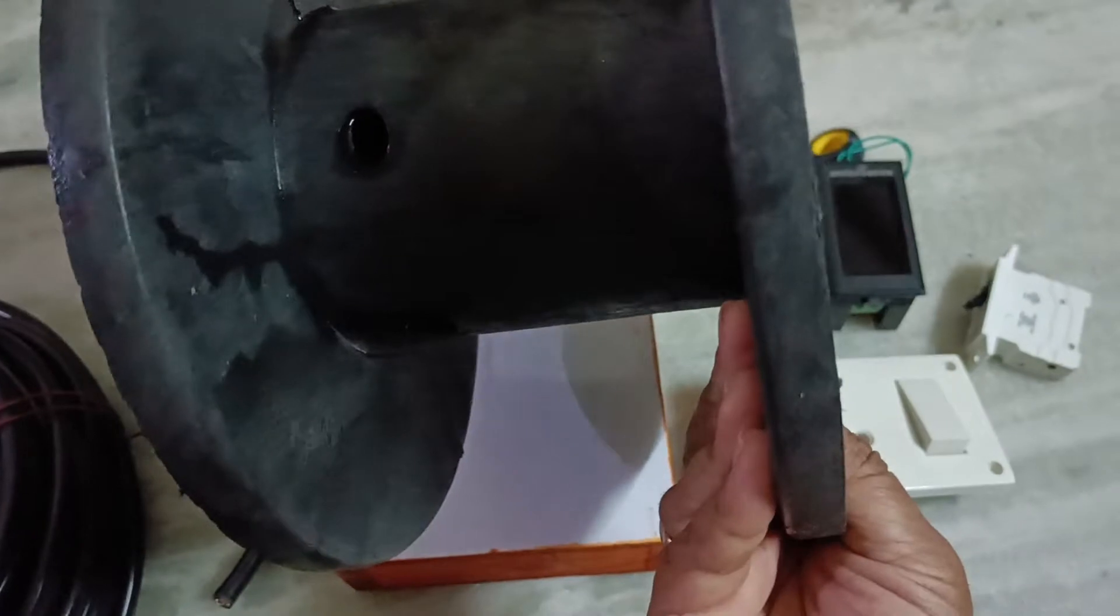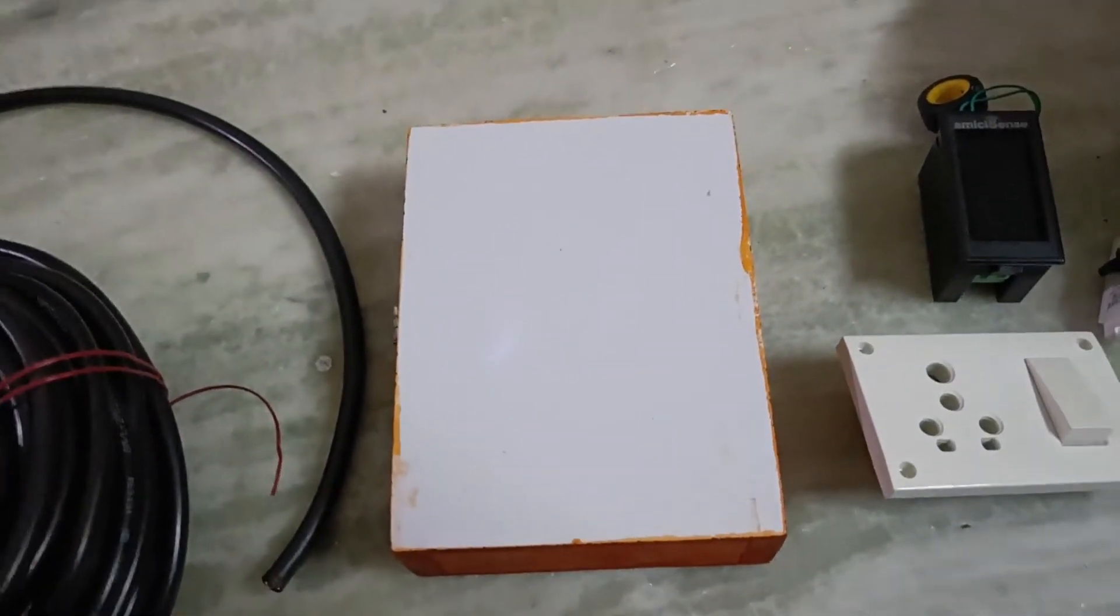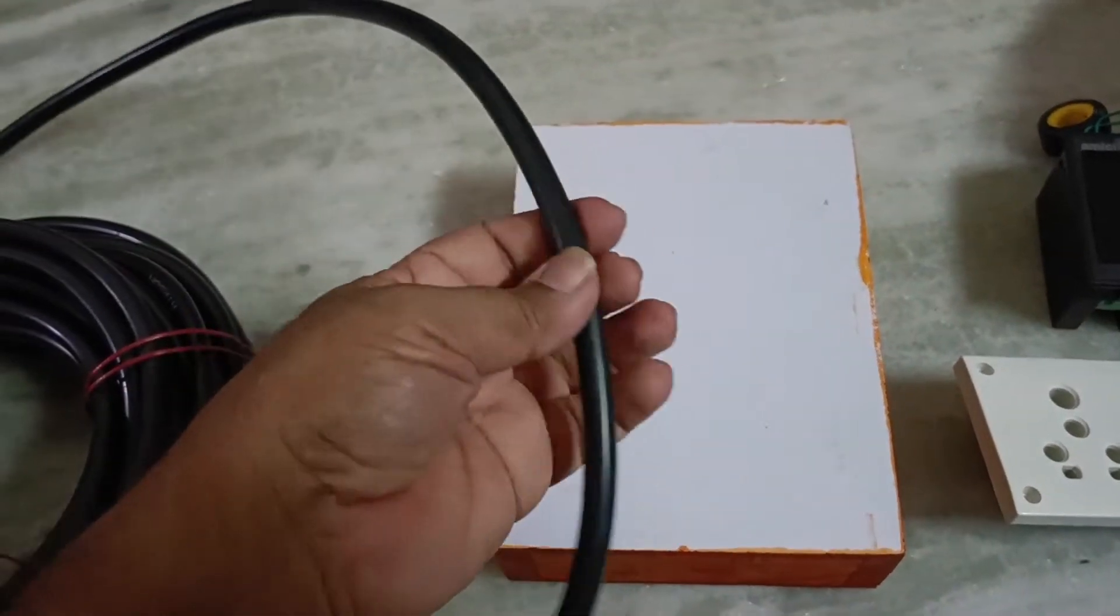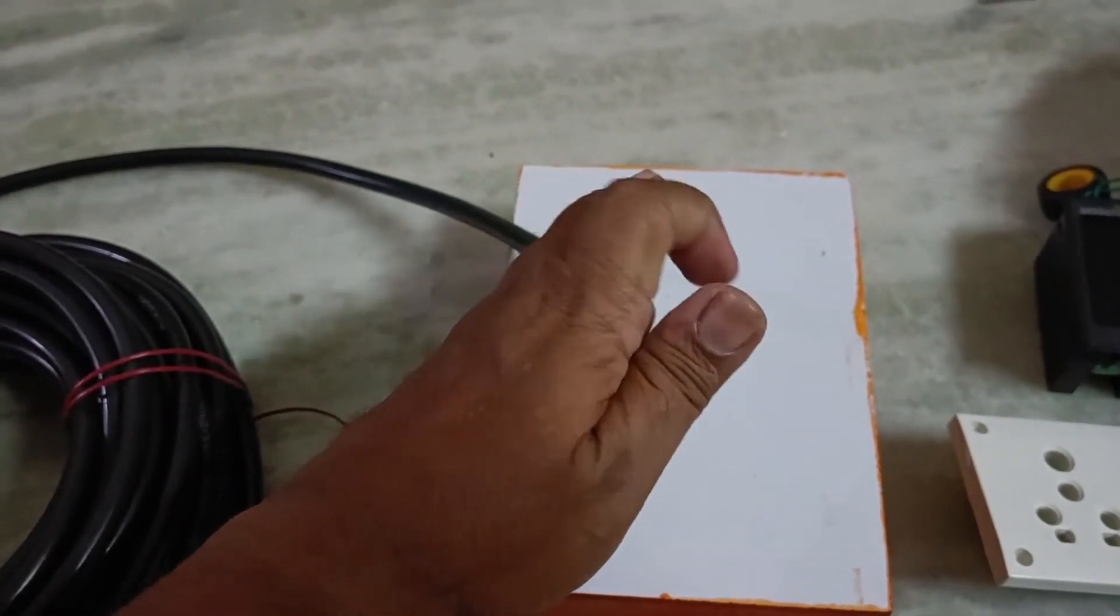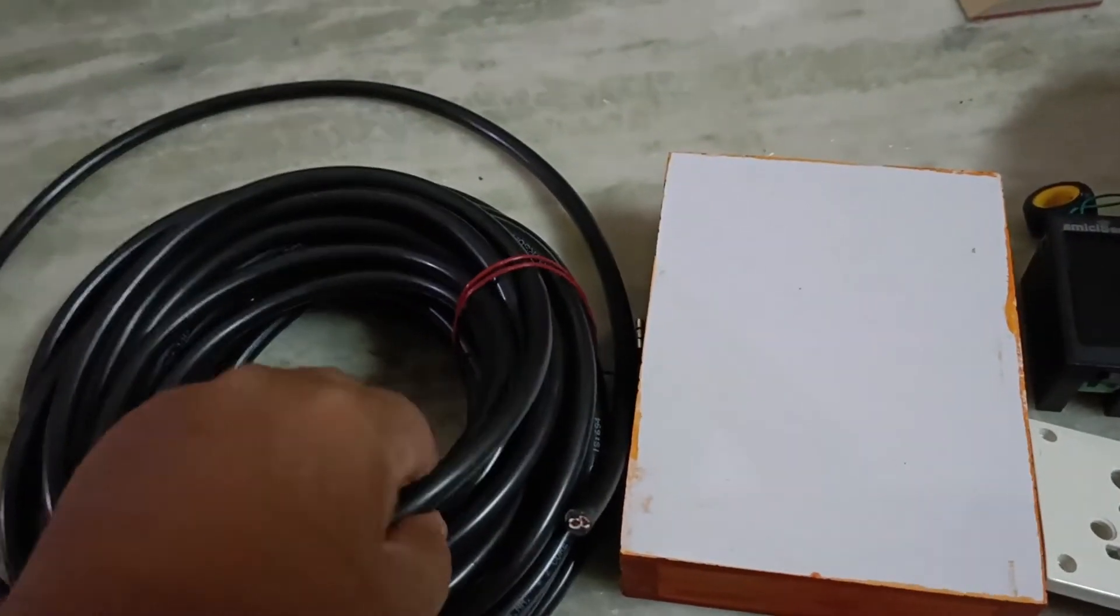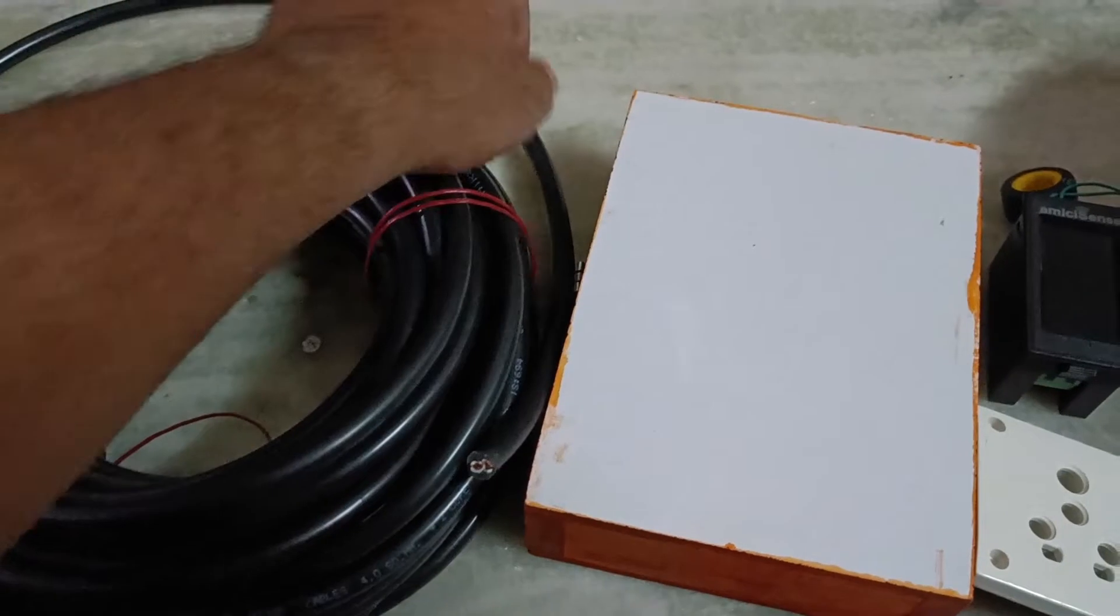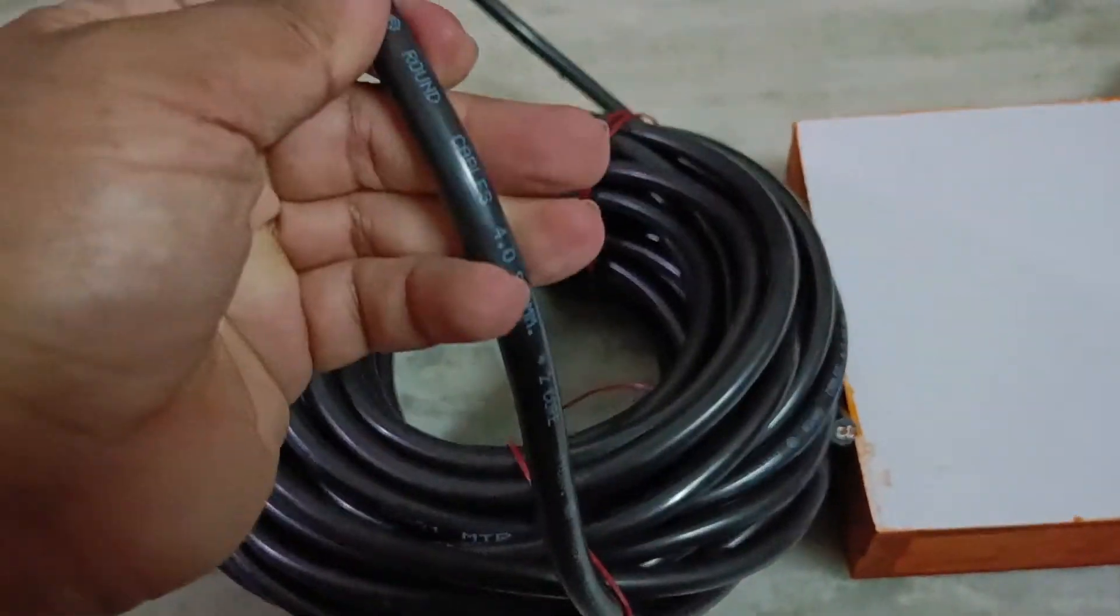Then you need four square mm two core cable, it should be copper. And one thing you need to ensure is that these cables can be of any brand but it should be IS certified like this.